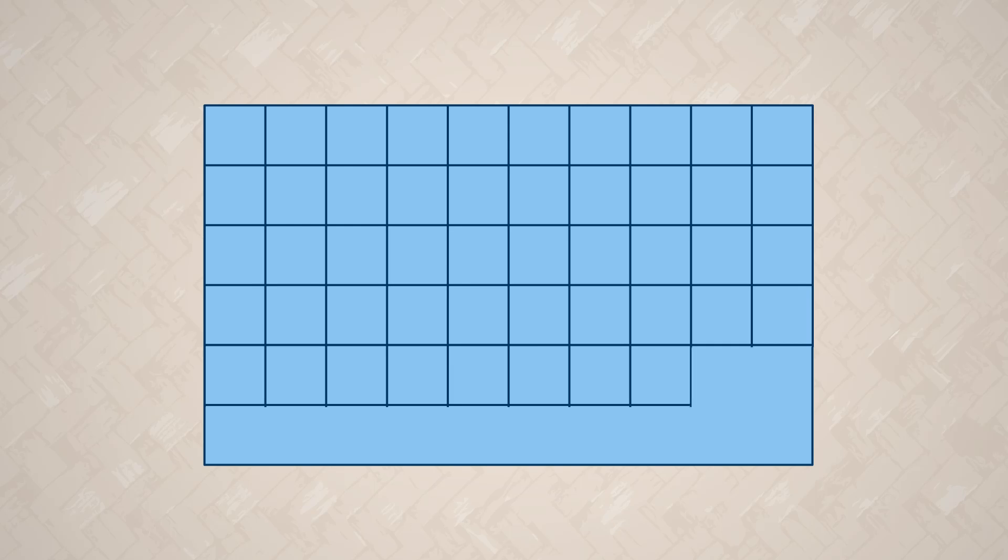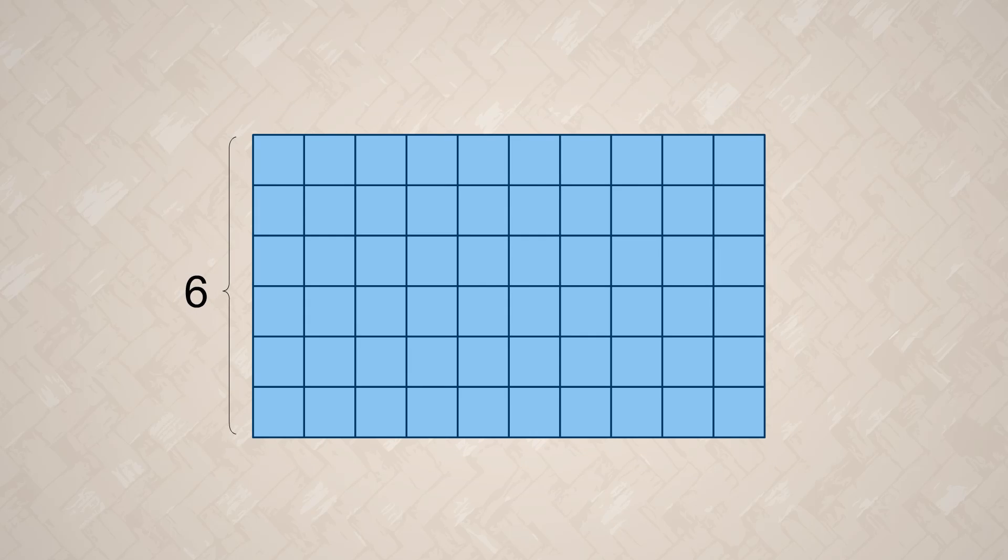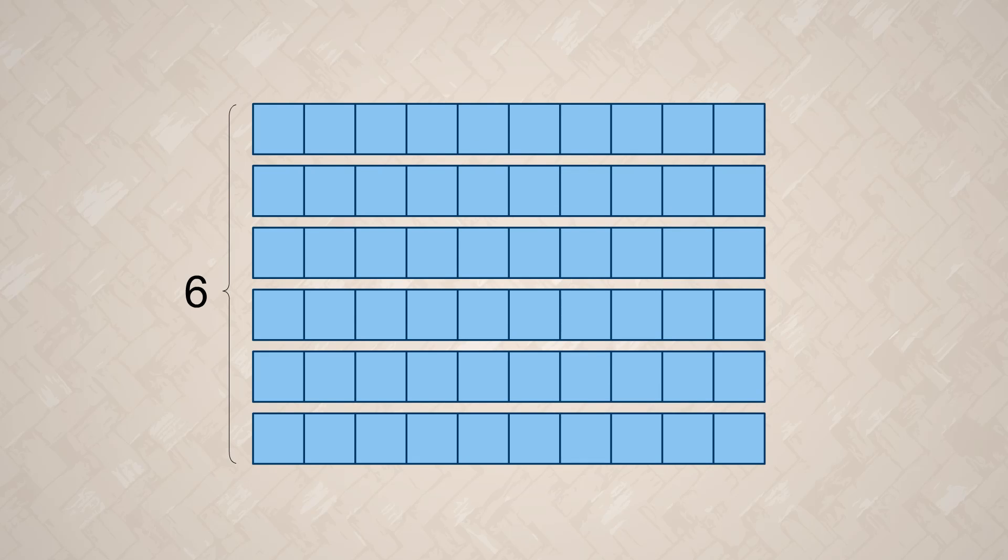We knew how big each tile was, so we could have marked the floor into little squares and counted all the squares. But with multiplication, it was much easier. All we had to do was to figure out how many rows of tiles we would need and how many tiles were in each row, and then multiply the two numbers.